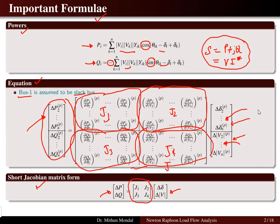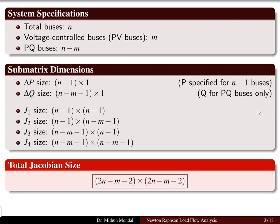In J1, it is the power with respect to phase angle. J2 is the power with respect to voltage magnitude. J3 and J4 are with respect to reactive power — in the similar manner, phase angle and voltage. The system specifications consider the total number of buses as n, and if the PV bus count is m, then the PQ bus count is n minus m.